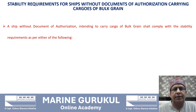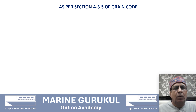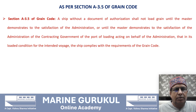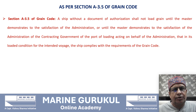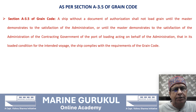A ship without a Document of Authorization intending to carry cargo of bulk grain shall comply with the stability requirements as per either of the following sections of the Grain Code: Section A 3.5 or Section A 9. As per Section A 3.5, a ship without a Document of Authorization shall not load grain until the master demonstrates to the satisfaction of the administration of the flag state, or the contracting government of the port of loading acting on behalf of the flag state administration, that in its loaded condition for the intended voyage the ship complies with the requirements of the Grain Code.